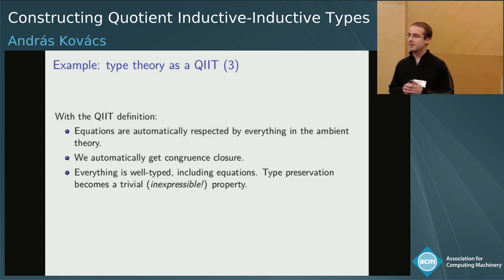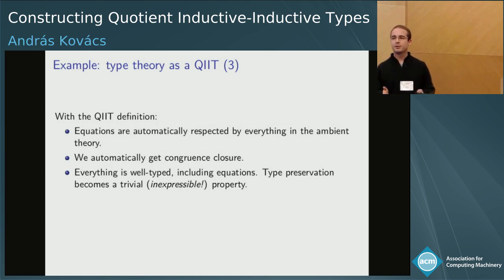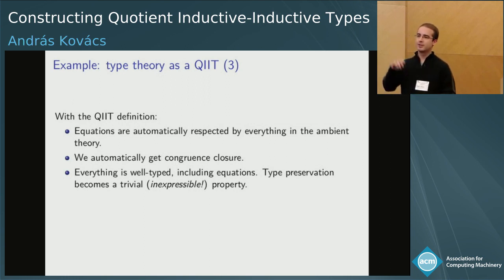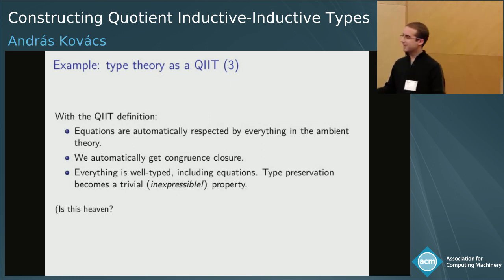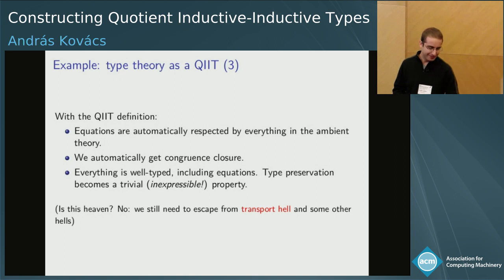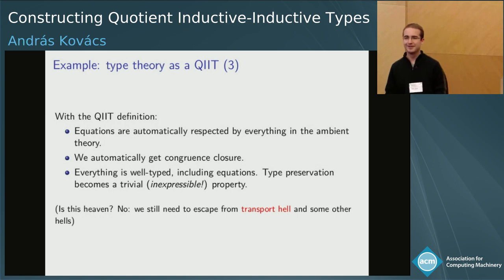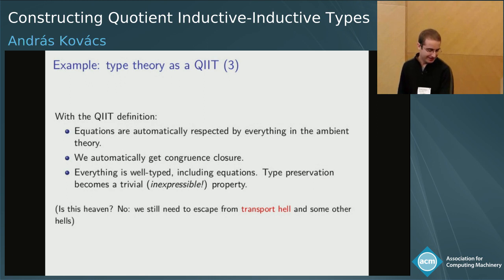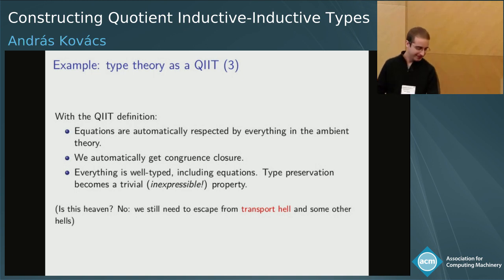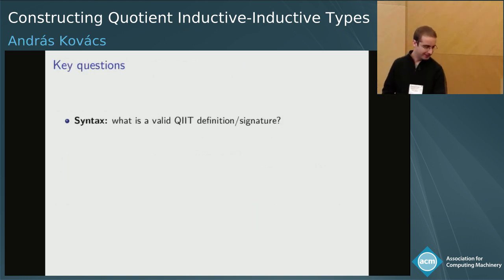It's something like working on abstract syntax trees where you're not able to talk about tokens. In this situation, you are not able to talk about type preservation because you are working at a higher level of abstraction. Is this heaven? Unfortunately, no, because there are lots of circles of hell we still need to escape from — this is just the lowest circle of hell. One notable remaining issue is 'transport hell', where transports and coercions proliferate beyond measure.